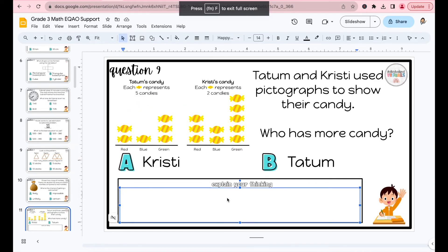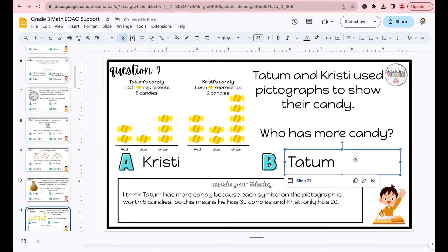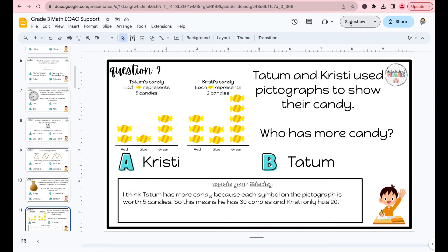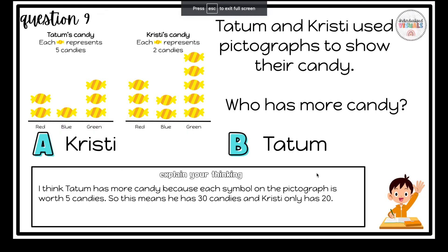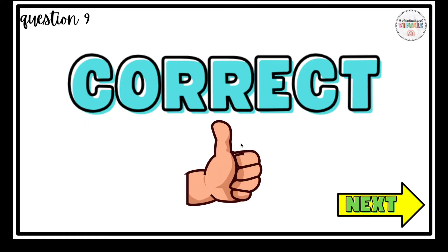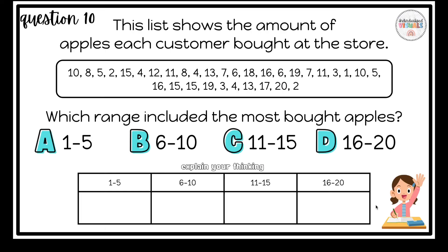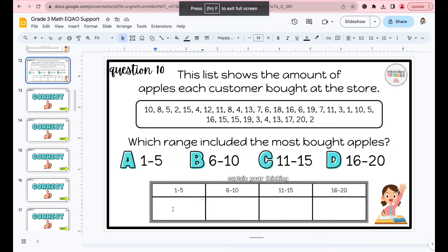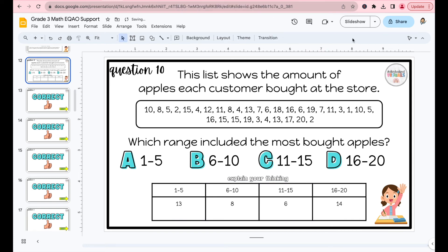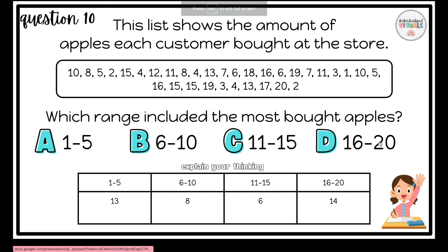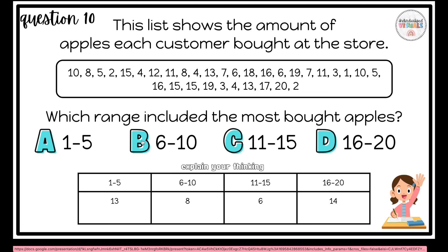They're going to type out their answer. For example, once they finish writing, they can click off the page and go back into slideshow mode — it'll take them right back to the question. Who has more candy? I think Tatum. Correct! Click next. For question ten it's the same thing: click escape, type the number, click off the screen, go back to slideshow, and then click your answer choice — say I get this one wrong just so you can see what happens.